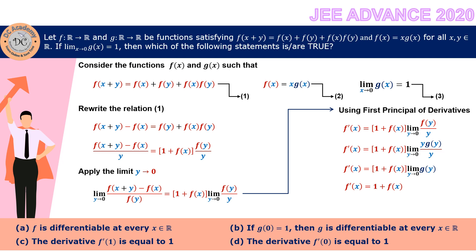Since f is defined from ℝ to ℝ, it is defined at every point. Therefore f'(x) also exists at every point, meaning f is differentiable at every x ∈ ℝ. That is why option A is correct.